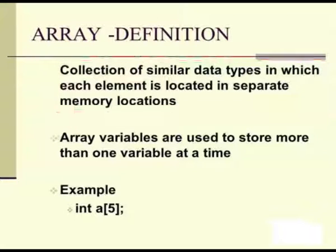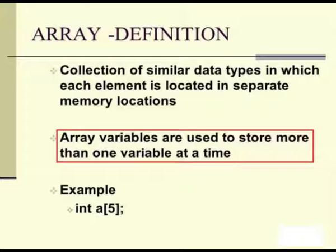What is an array basically? An array is a collection of similar data types in which each element is located in separate memory locations. Normally we have one variable name for one value. Using arrays, if you have 5 or 6 integer values of similar data type — they should all be integer, all float, or all characters — they can be placed in continuous memory locations under the same variable name. Array variables are used to store more than one variable at a time.